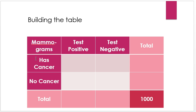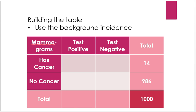Let's build a table of all the different possibilities for the mammogram. There's has cancer versus no cancer, and test positive versus test negative, with various subtotals. To make things concrete, I'm going to imagine doing this for 1,000 women in their 40s — total population 1,000. That helps make things explicit, and with numbers like 0.1%, everything works out to be an integer.